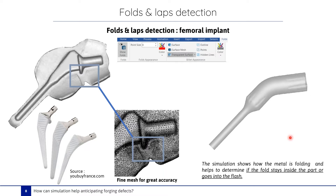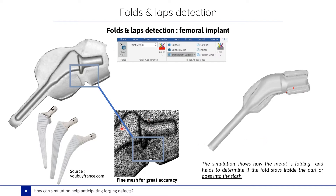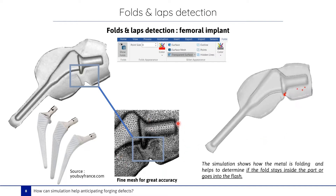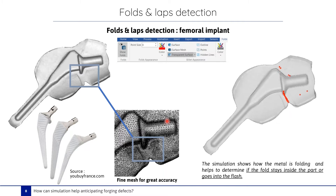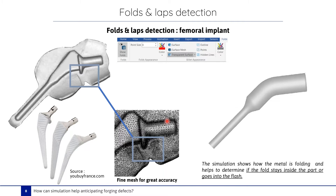In Forge software, adaptive remeshing happens during the whole simulation. Thanks to the adaptive remeshing, we can accurately detect the faults.